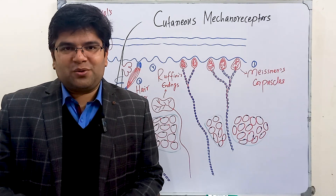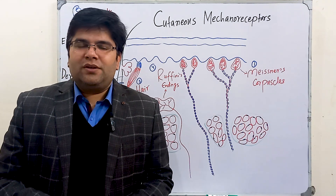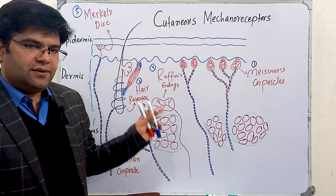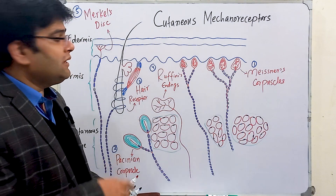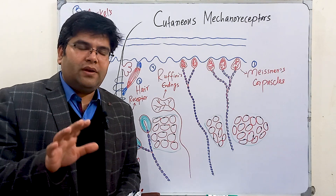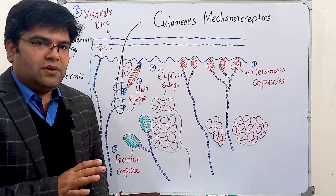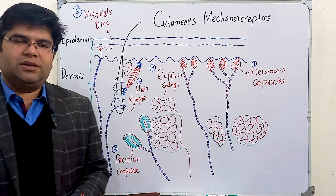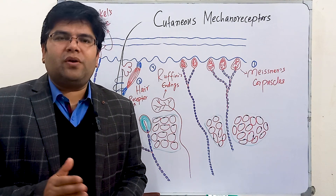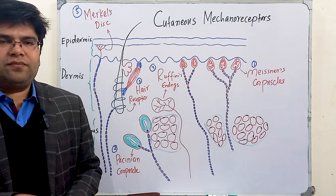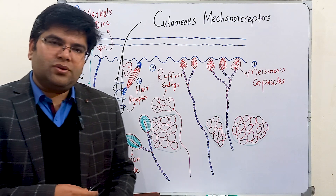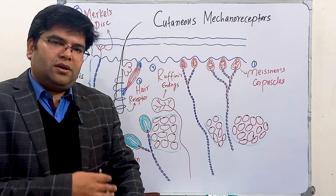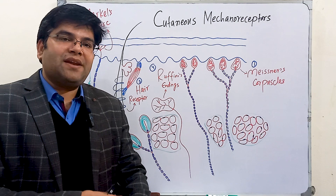Assalamu alaikum dear students, welcome to Dr. Rumi's lectures. Today we are going to study cutaneous mechanoreceptors. These are tactile receptors which are present in our skin. We will discuss five important receptors which detect various kinds of tactile sensations like fine touch, crude touch, pressure, vibration, and two-point tactile discrimination from the skin. All of them are somatic receptors that detect sensations from the skin.